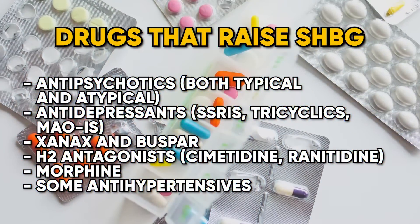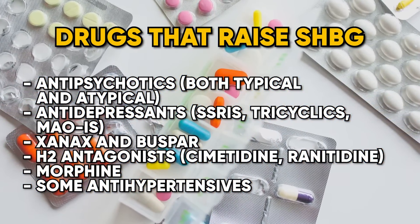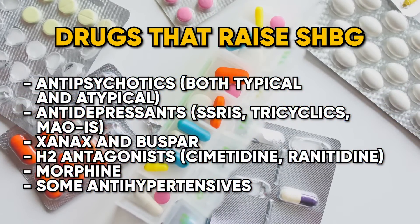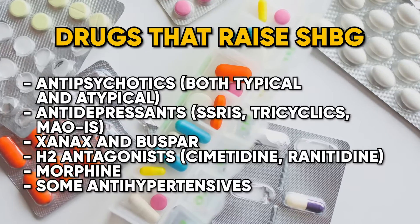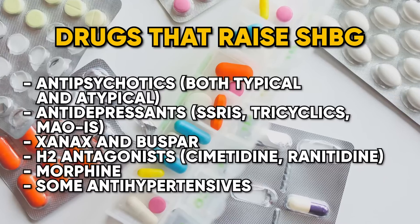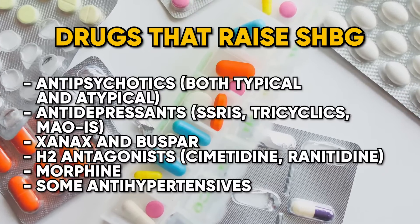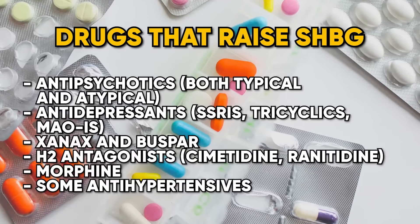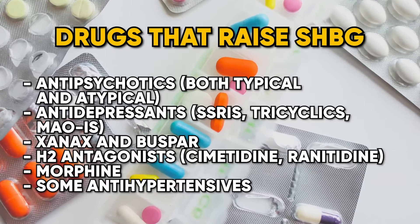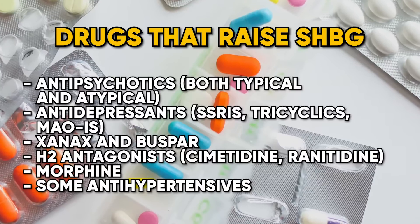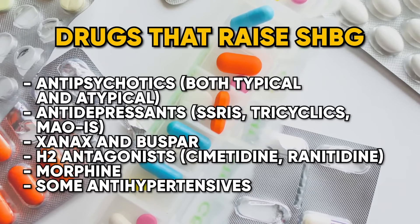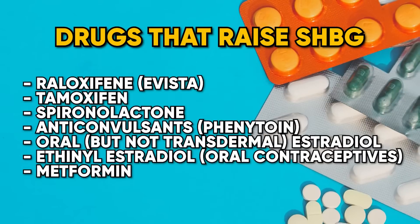There are also various drugs known to raise sex hormone binding globulin, usually via increasing prolactin. These include antipsychotics — both typical and atypical — antidepressants such as SSRIs, tricyclics, MAOIs, Xanax, Buspar, H2 or histamine-2 antagonists such as cimetidine and ranitidine, morphine, and some other antihypertensives.